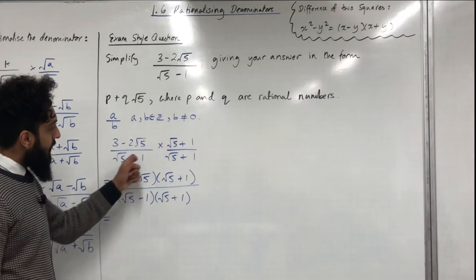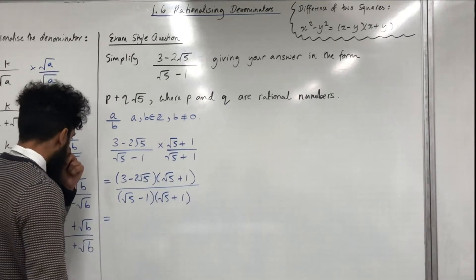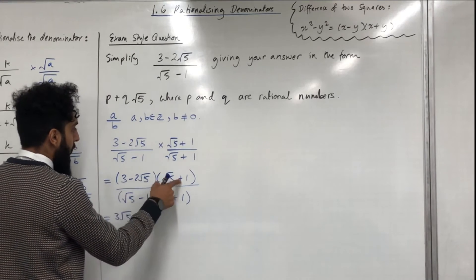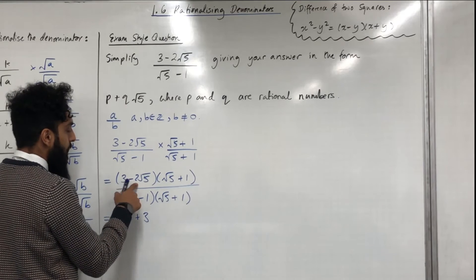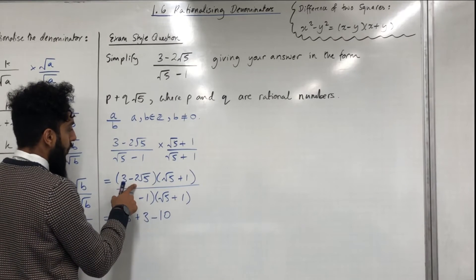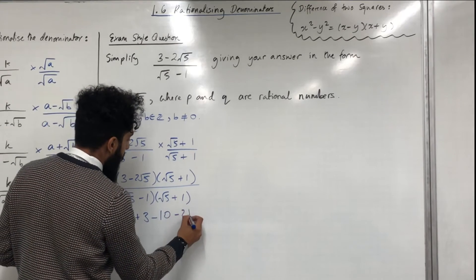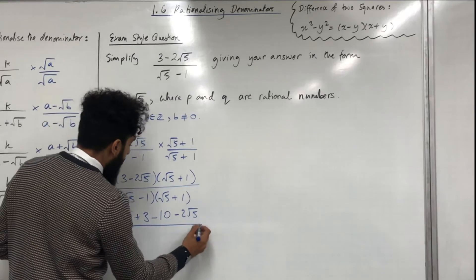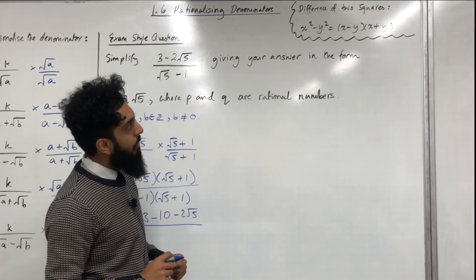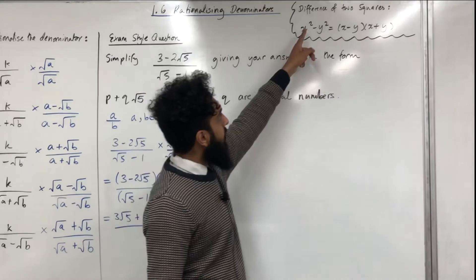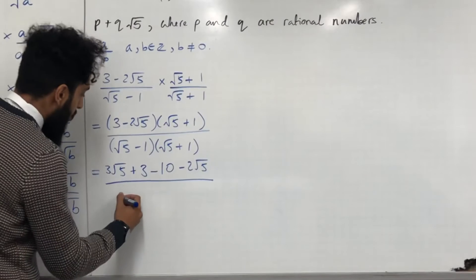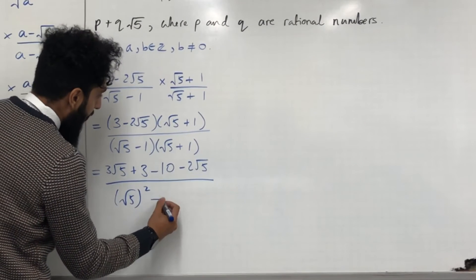In the numerator we have (3 − 2√5)(√5 + 1): 3 × √5 = 3√5; 3 × 1 = 3; −2√5 × √5 = −10; −2√5 × 1 = −2√5. In the denominator we have (√5 − 1)(√5 + 1), which is of the form difference of two squares and can be rewritten as (√5)² − 1².